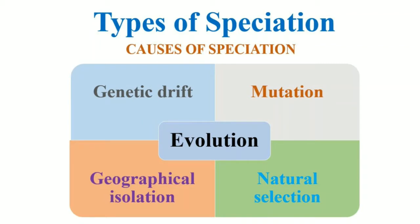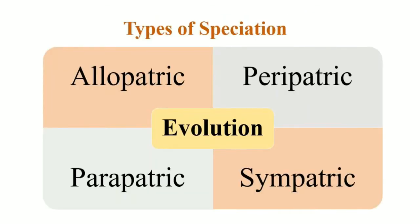Next, mutation can happen, natural selection can happen, and geographical isolation can happen. Moving on to the types of speciation — speciation is basically of four types: allopatric speciation, peripatric speciation, sympatric speciation, and parapatric speciation.